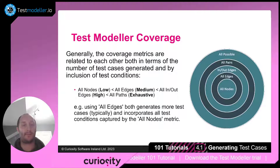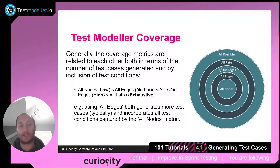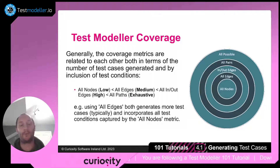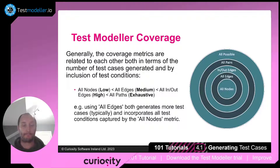Coverage is often quite an argumentative term. For us, we're talking about the coverage of the model — how many tests does it take to cover every single path, every single journey that exists within that model? We've got different ranges of coverage depending on the type of testing you want to do. If you want to do some lightweight user-based testing, perhaps all nodes is enough. If you want to do something exhaustive, maybe you need to look at every single path and every single condition. There are different profiles depending on your scenario and the importance of a particular piece of testing. There are different ways to get more effective tests, more exhaustive or equally light-touch tests. I'm now going to show you how we generate them.